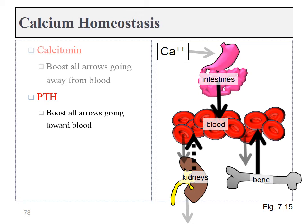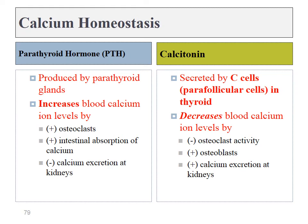Parathyroid hormone does the opposite. It will increase calcium absorption from the gut, decrease calcium excretion from the kidneys, and activate osteoclasts, which degrade bone tissue, releasing calcium back into the bloodstream. These two hormones have the exact opposite effects of one another. Luckily, they affect the same three tissues, which cuts the amount of memorization needed in half.